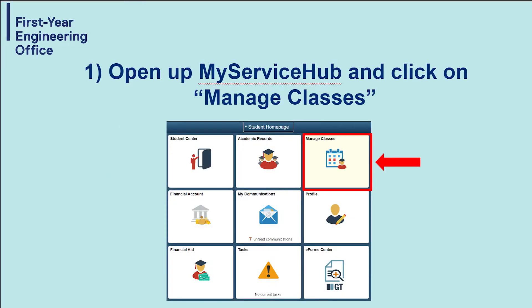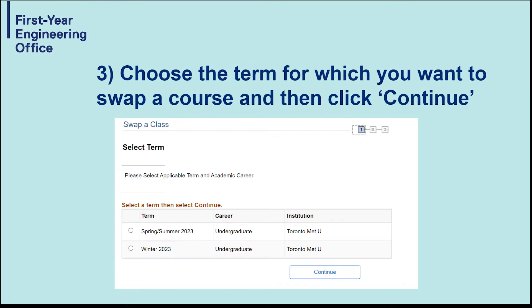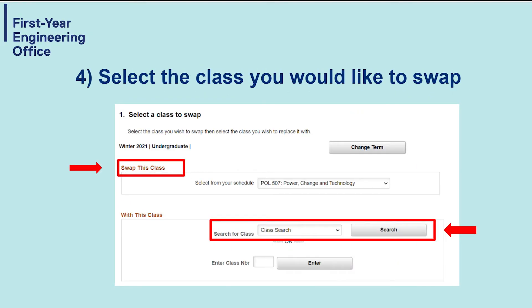Step 1: Open up My Service Hub and click on Manage Classes. Step 2: Click Swap in the left column. Step 3: Choose the term for which you want to swap a course and then click Continue. Step 4: Select the class you would like to swap.